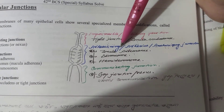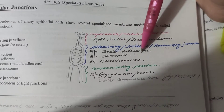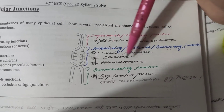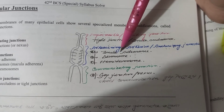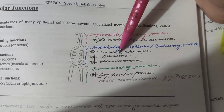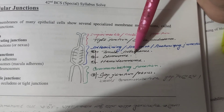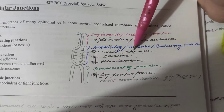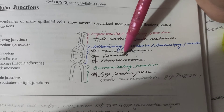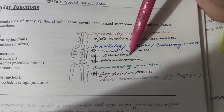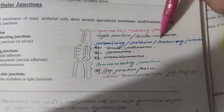So, the adhering, adhesive, anchoring junction includes zonula adherens, desmosome, and hemidesmosome.